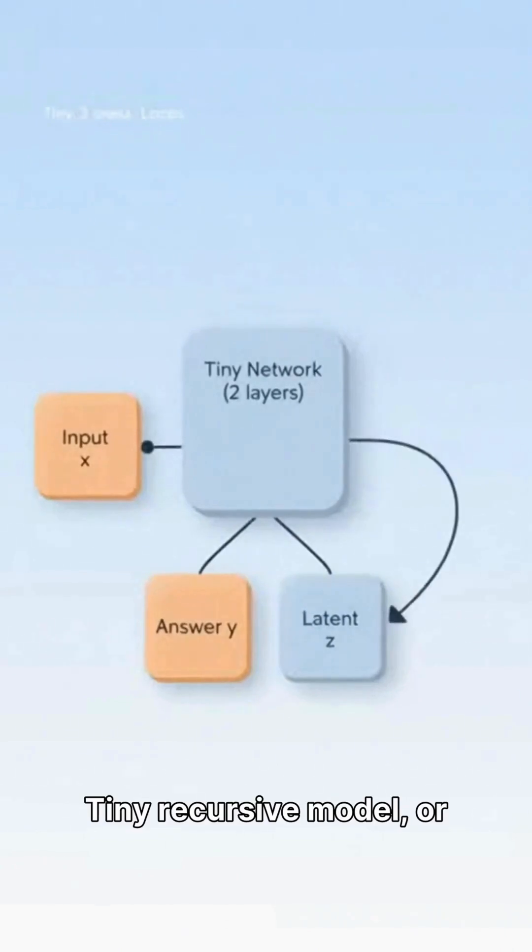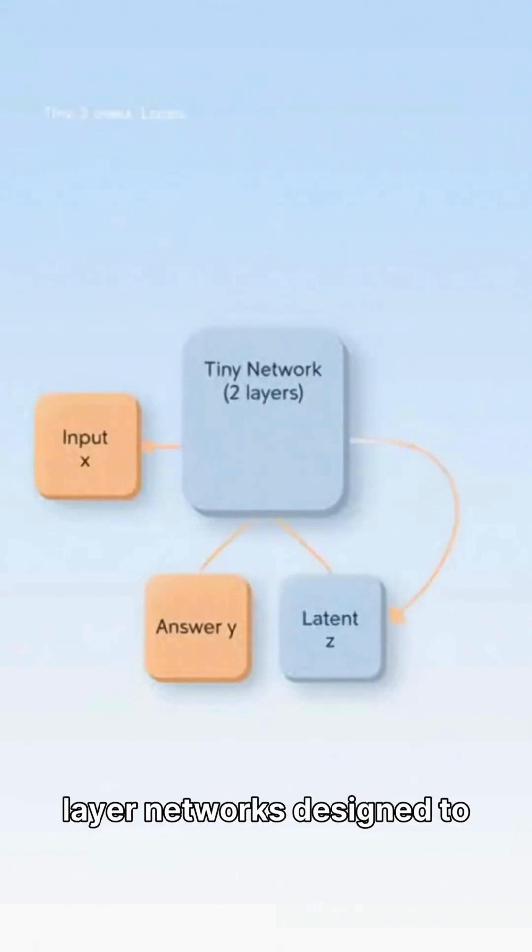Tiny Recursive Model, or TRM, are innovative two-layer networks designed to iteratively refine their own answers through a continuous looping process.